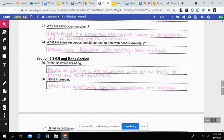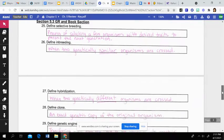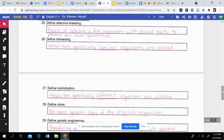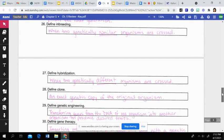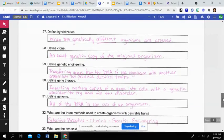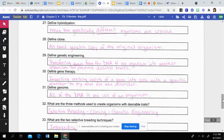Then moving on to section 5.3. Defining selective breeding. This is the process of selecting a few organisms with desired traits to parent the next generation. Inbreeding is when two genetically similar organisms are crossed. So you're mixing essentially the same type of organism together. Then hybridization is when two genetically different organisms are crossed. So you're taking two things that are different and mixing them together that way.